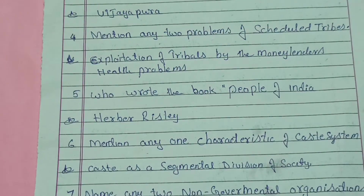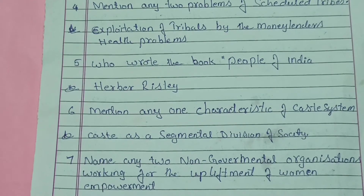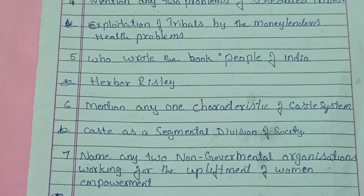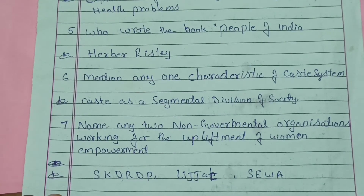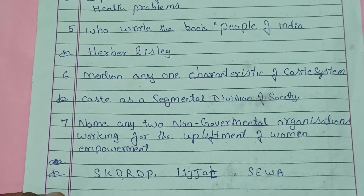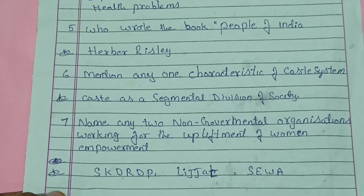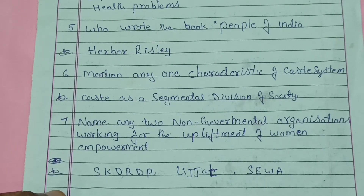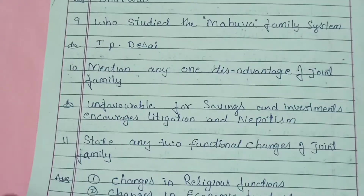The answer is Herbert Risley. Mention any one characteristic of the caste system: the answer is caste as a segmental division of society. Name any two non-governmental organizations (NGOs) working for the upliftment of women empowerment. The answers are SKDRDP — Shree Kshethra Dharmasthala Rural Development Program — and Lijjat Sewa. Remember these NGOs also work for the upliftment of women.